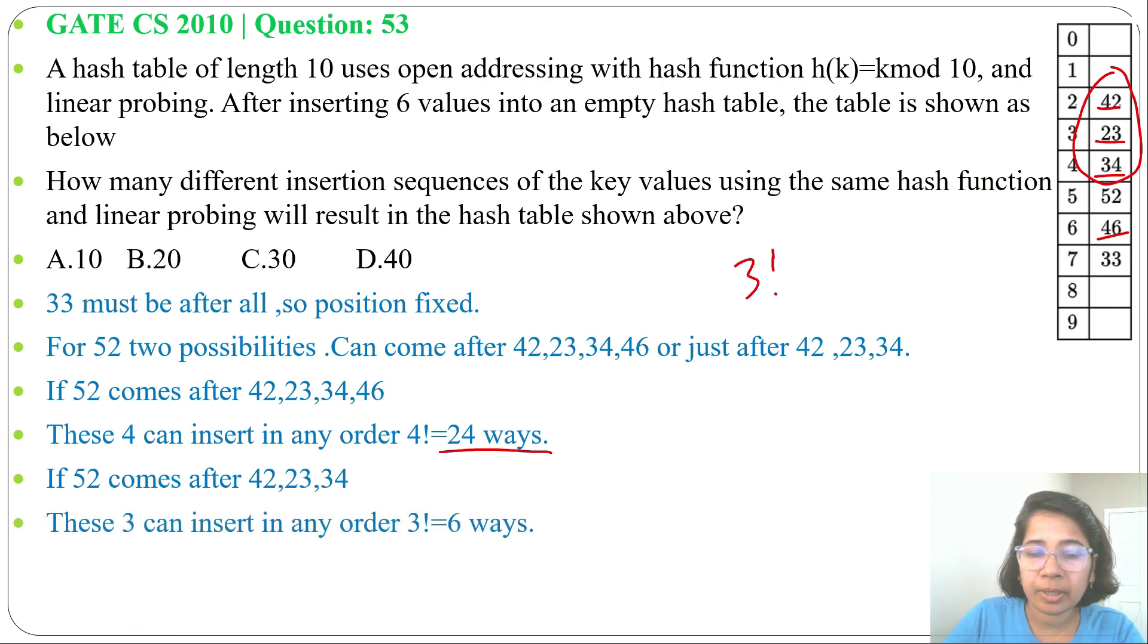So total number of ways will be 24 plus 6, it will be 30. Answer will be option C, 30.